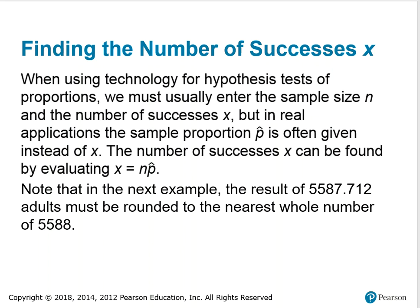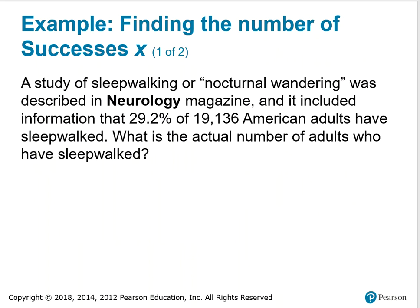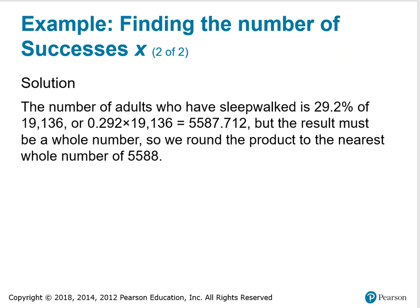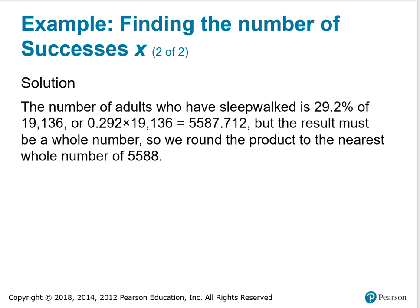Note that in the next example, the result of 5587.712 adults must be rounded to the nearest whole number of 5588. A study of sleepwalking was described in Neurology magazine and included information that 29.2% of 19,136 American adults have sleepwalked. The number of adults who have sleepwalked is 0.292 times 19,136 equals 5587.712, which rounds to 5588.